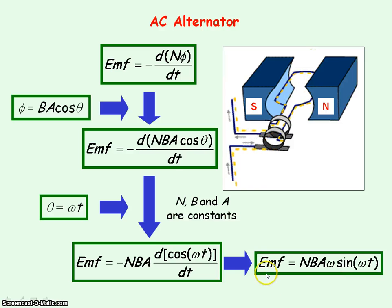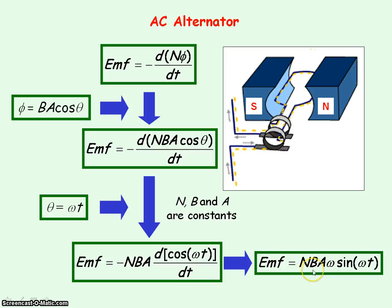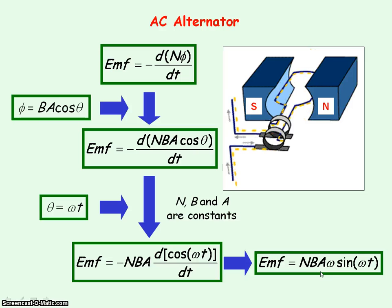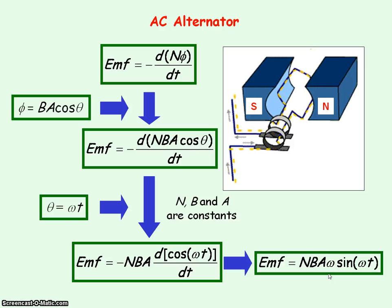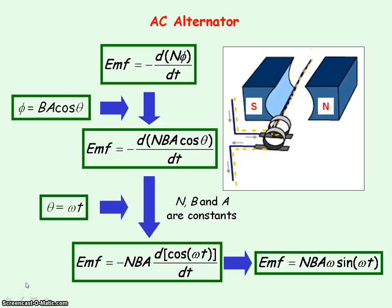The induced EMF is directly proportional to the number of turns of coils, directly proportional to the magnetic flux density, directly proportional to the area of the coils, and directly proportional to the angular frequency, or the frequency of rotation of the coils inside the magnetic field. Note that you do not need to know this derivation for the exam.